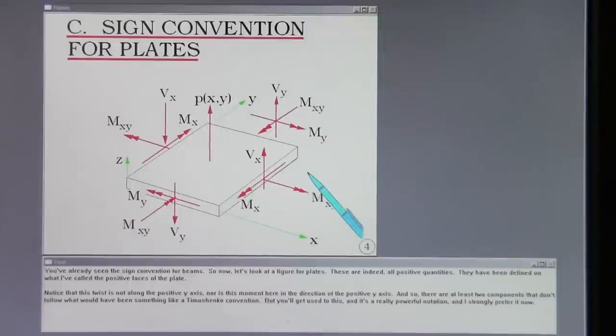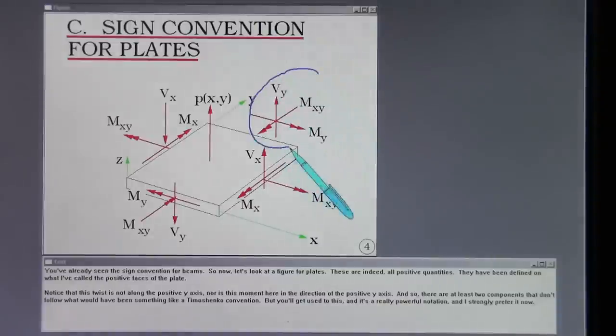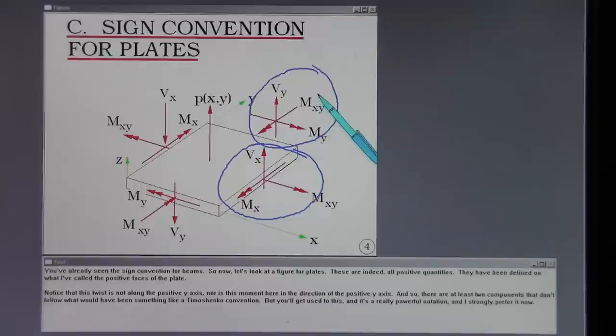These are indeed all positive quantities. They have been defined on what I've called the positive faces of the plate. Notice that this twist is not along the positive y axis, nor is this moment here in the direction of the positive y axis. And so there are at least two components that don't follow what would have been something like a Timoshenko convention. But you'll get used to this, and it's a really powerful notation, and I strongly prefer it now.